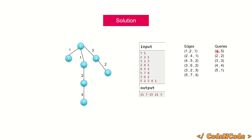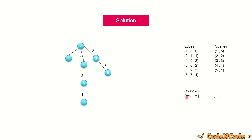For example, query with value 1 was originally at position five, so we save its position. After sorting, the positions of queries can change, so we need to track them. I'll use a result array to store results for each query and a count variable to keep track of how many valid pairs we have found so far.